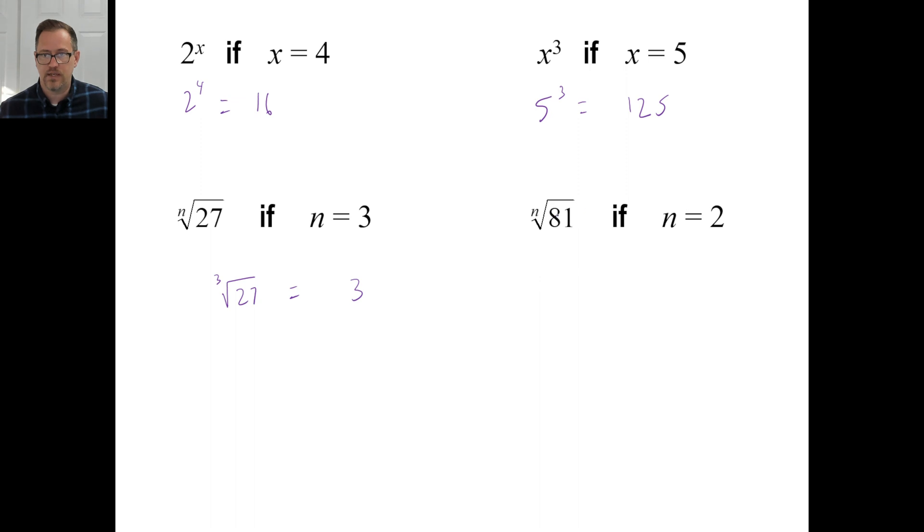And the n root of 81. If n is 2, that means just the square root of 81. You don't even have to write it. You know it's a 2 there, which will just give you 9. 9 times 9 is 81. That's all there is to it.